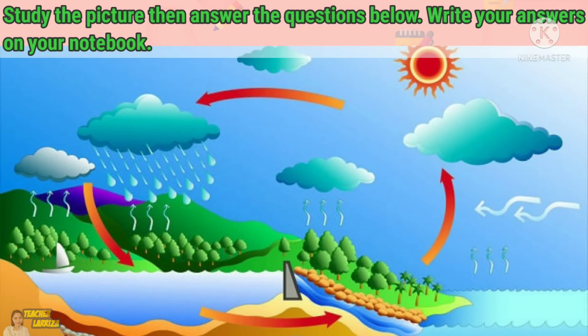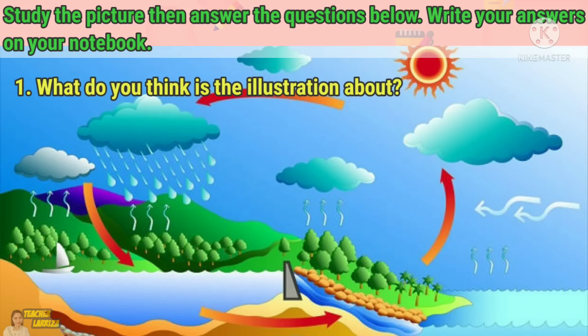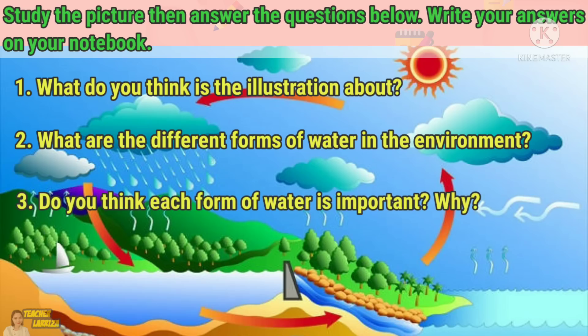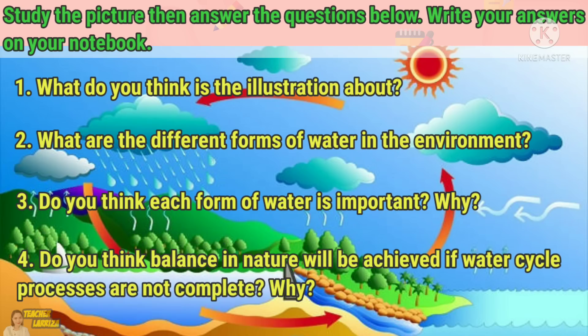For our second activity, study the picture then answer the questions below. Write your answers in your notebook. 1. What do you think the illustration is about? 2. What are the different forms of water in the environment? 3. Do you think each form of water is important? Why? 4. Do you think balance in nature will be achieved if water cycle processes are not complete? Why?